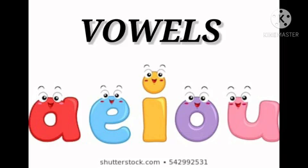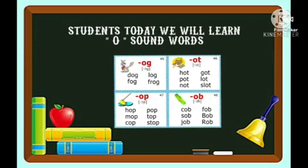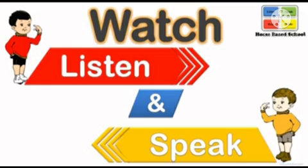Students, do you know how many vowels are there? Yes, there are five vowels in English alphabets: A, E, I, O, U. As you have already learnt A, E and I sound words in the previous video, so watch, listen and speak.